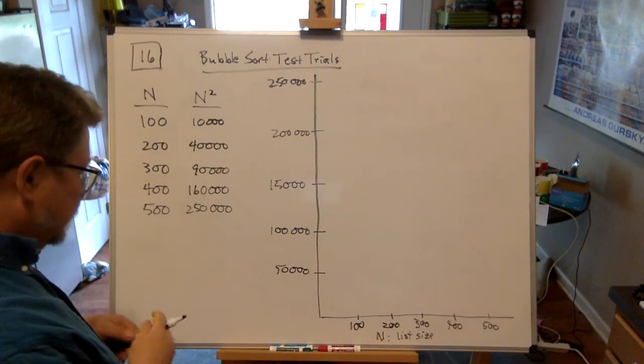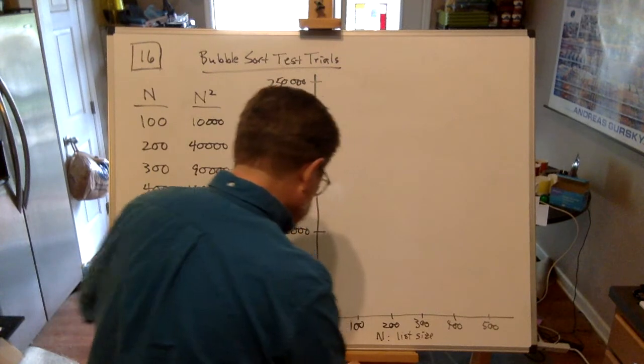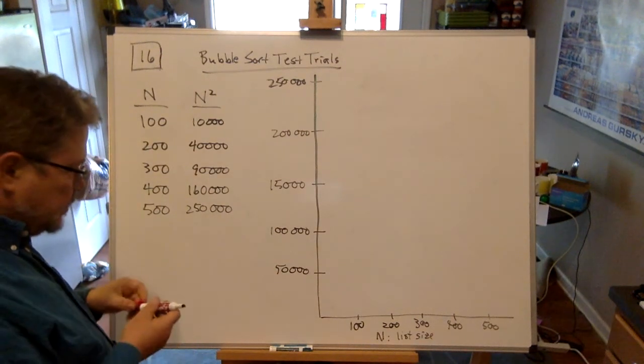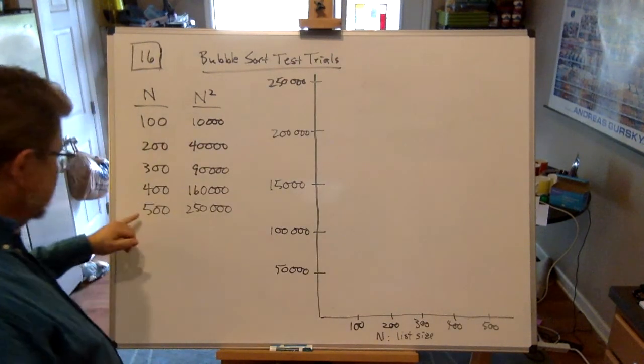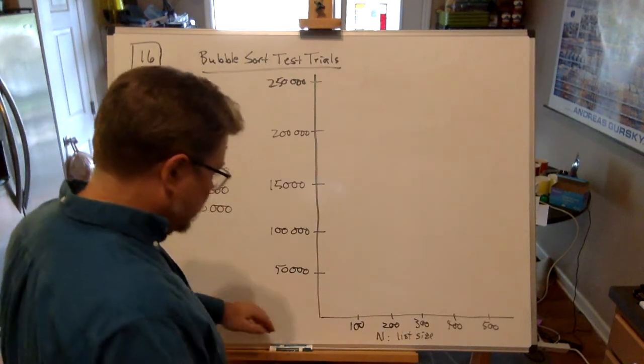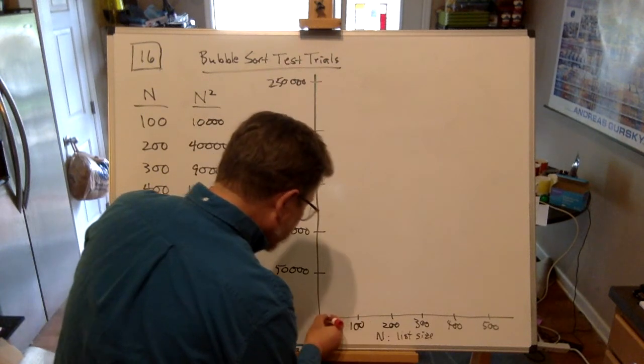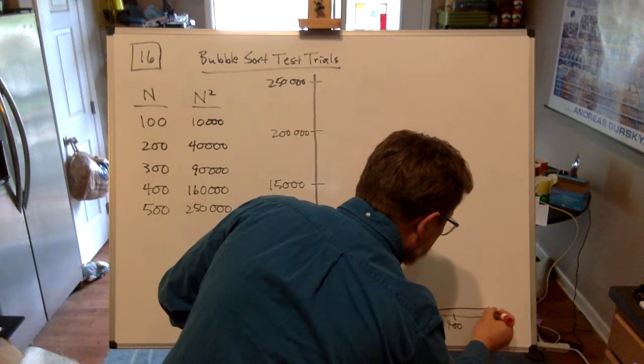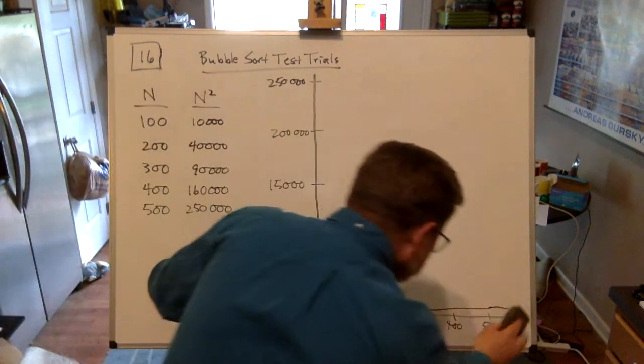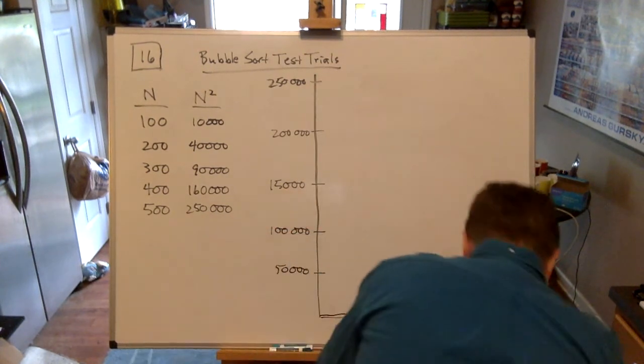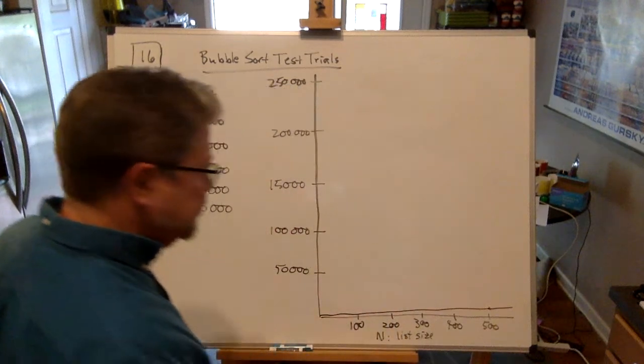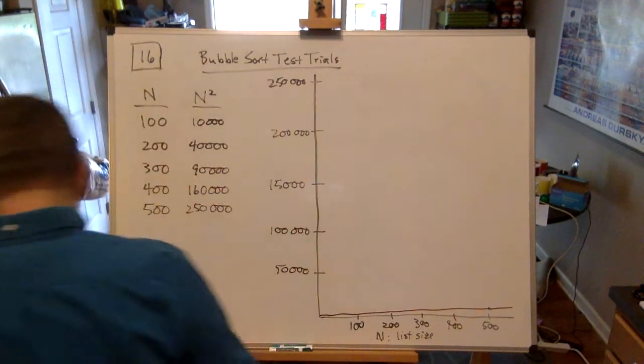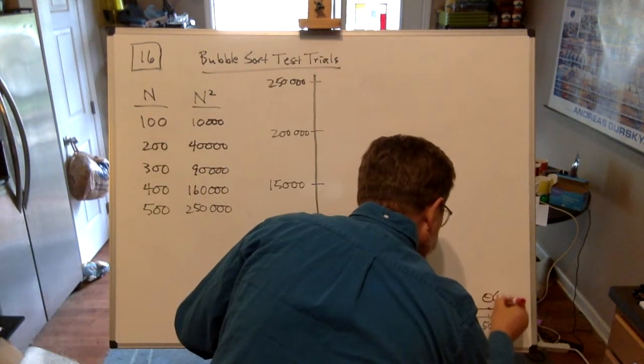If I wanted to graph the best case scenario, I'm going to use red. The best case would be on a list of size 100, we only need 100 comparisons. On size 200, only 200 comparisons. On a scale where the first notch is 50,000, this is not going to make it very high. It's almost going to be flatlined down here. When I draw the line to connect those points, it's gradually going up but it's a straight line. This is for order n, which is my best case.